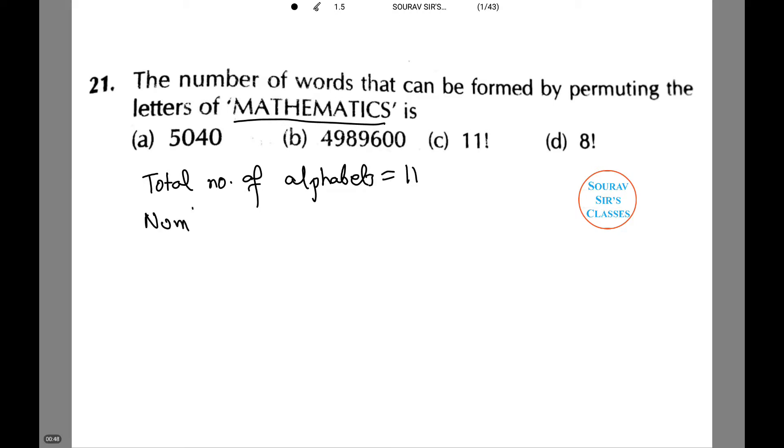Total number of A's equals 2, total number of T equals 2, total number of M equals 2. We need to always keep in mind the repetitions that are present in the words.